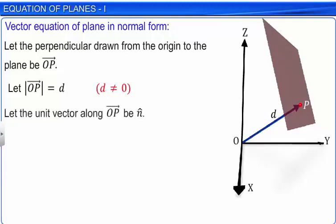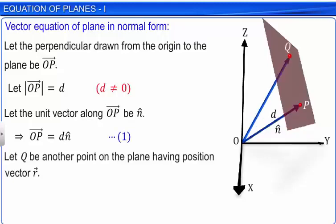Let the unit vector in the direction of vector OP be vector n̂. Thus, vector OP is equal to the length d multiplied by unit vector n̂. Let this be equation 1. Let Q be another point on the plane having position vector r. Thus, vector OQ is equal to vector r. Let this be equation 2.